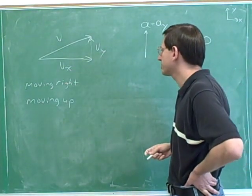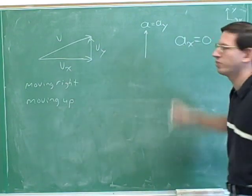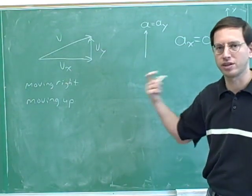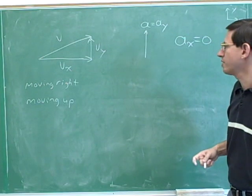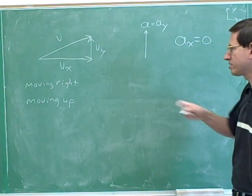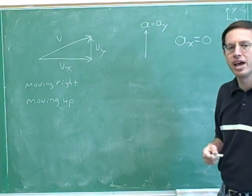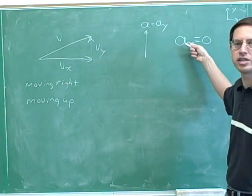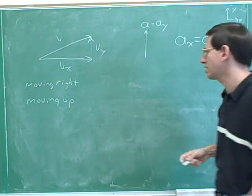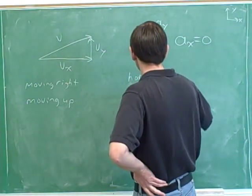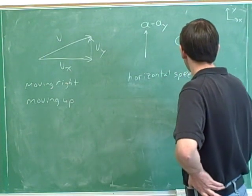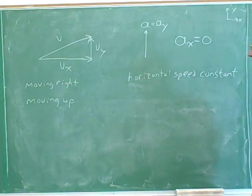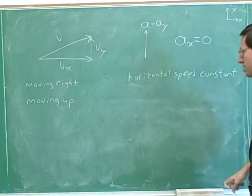So what can we say about our horizontal motion? Horizontally, we have zero acceleration. If the acceleration were parallel to the velocity, we would have increasing speed. And if the acceleration were anti-parallel to the velocity, we'd have decreasing speed. If the acceleration is zero, our speed is neither increasing nor decreasing — it's constant. So our horizontal speed here must be constant. A zero acceleration means constant speed.